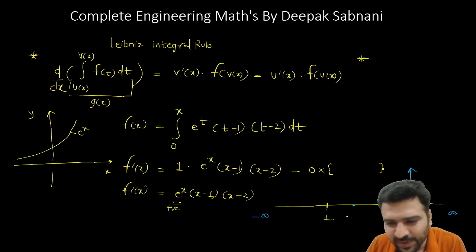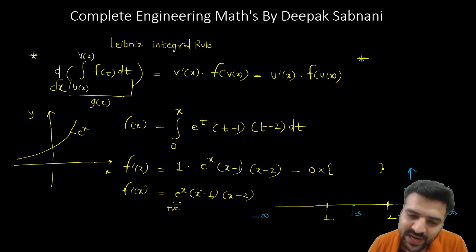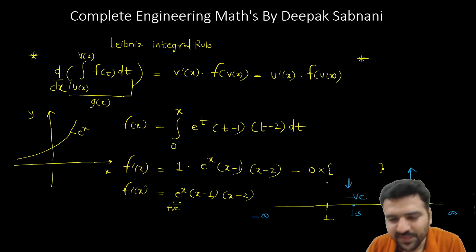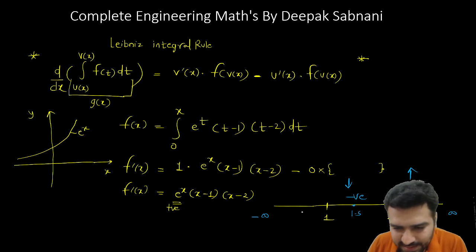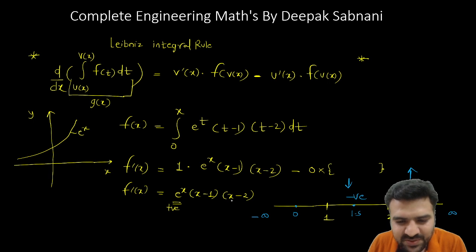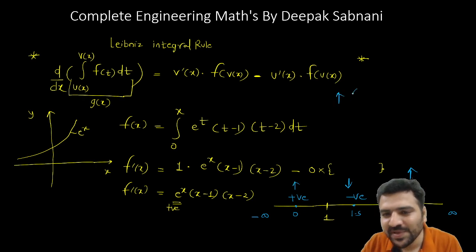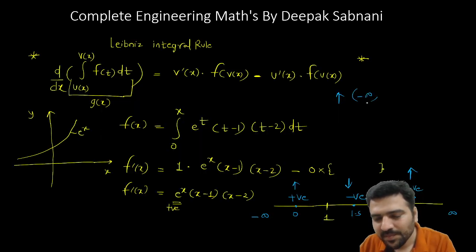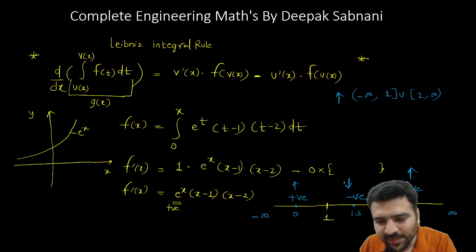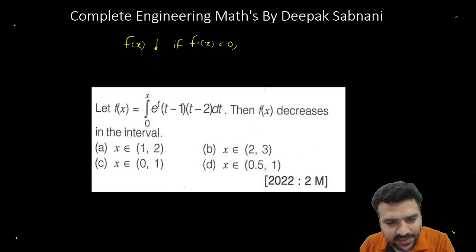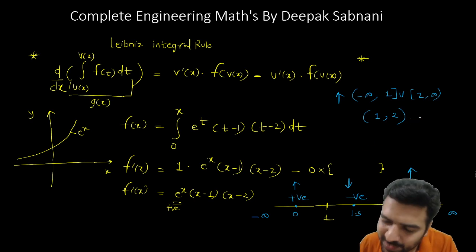Similarly, in (1, 2), put a value like 1.5: (1.5-1) is positive, (1.5-2) is negative — positive times negative is negative. So the derivative is negative, meaning the function is decreasing on (1, 2). For a value less than 1, say x = 0: (0-1) is negative, (0-2) is negative — negative times negative is positive. So the derivative is positive, meaning the function is increasing. Therefore f(x) is strictly decreasing on (1, 2).